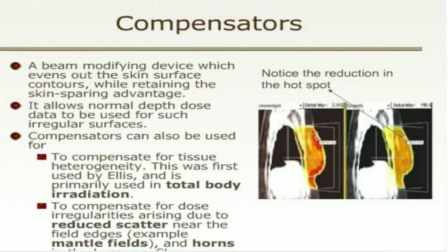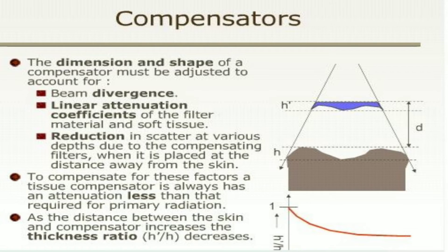A compensator is a beam modifying device which evens out the skin surface contours while retaining the skin-sparing advantage. It allows normal depth dose data to be used for such irregular surfaces. Compensators can also be used to compensate for tissue heterogeneity and to compensate for dose irregularities arising due to reduced scatter near the field edges. The dimensions and shape of the compensator must be adjusted to account for beam divergence, linear attenuation coefficient of the filter material and soft tissue, and reduction in scatter at various depths due to the compensating filter when placed at a distance away from the skin.